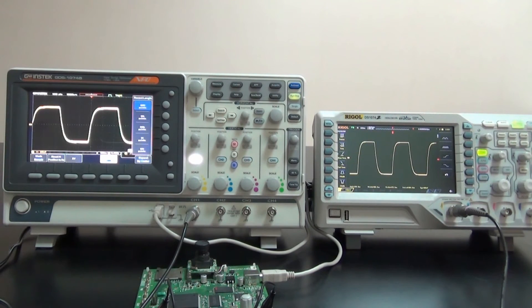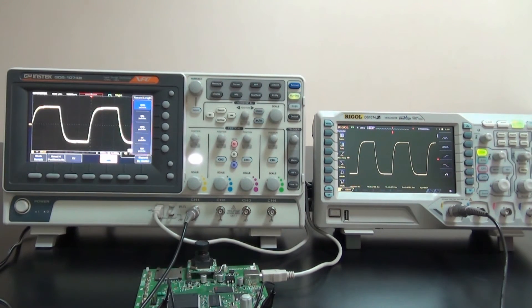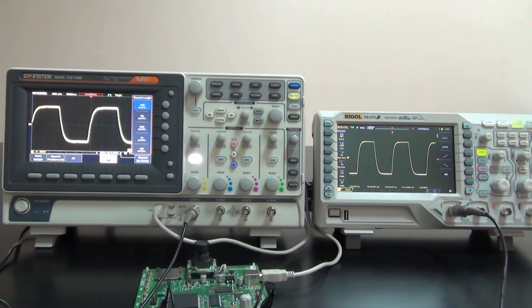These results show that GDS-1000B can capture and display the burst signal clearer than that of DS-1000Z due to the high waveform update rate.